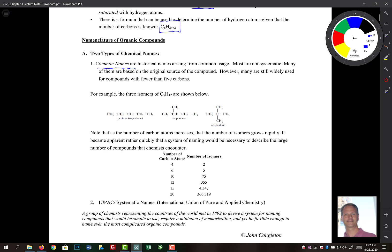Most are not systematic. Many of them are based on original source of the compound. But because they've been used so widely, everyone calls ethanoic acid acetic acid. It's just been absorbed into kind of the regular language of organic chemistry.